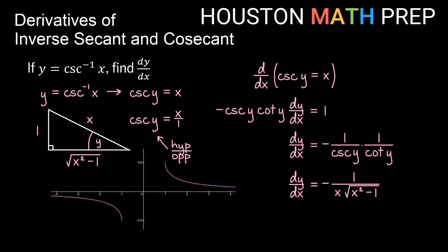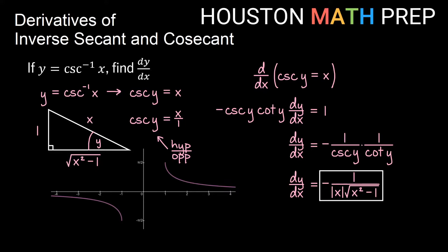Looking at the graph of the inverse cosecant function, picking a point in quadrant 1 and drawing a tangent line shows the slope is negative everywhere. In quadrant 3, tangent lines also slope downward. So we should always get a negative derivative. The root is always positive, and we have a negative in the formula, so we need the x term to always be positive. If x is negative in quadrant 3, we'd get the wrong sign. So we put absolute value brackets around x, and our formula is the opposite sign of the inverse secant derivative.